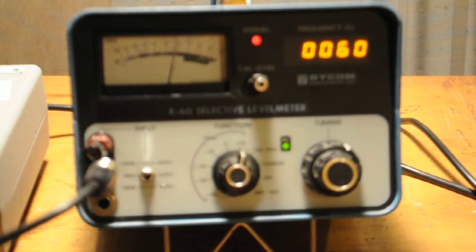Okay, this is a demonstration of a RICOM model R60 Selective Level Meter. This device is used to measure the output of various pieces of equipment that put out low-frequency signals, audio, and EMI type signals.